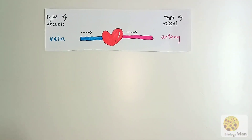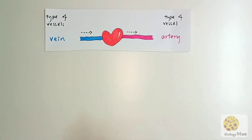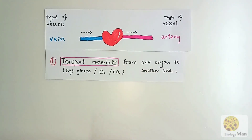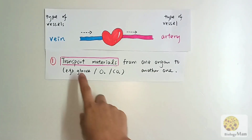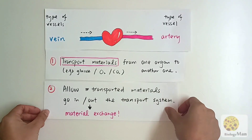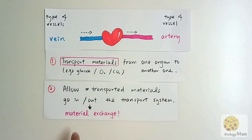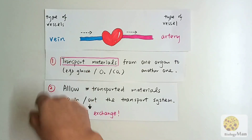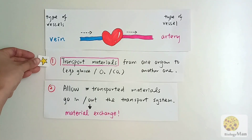Today we will talk about veins. A vein is a type of blood vessel. Blood vessels serve two functions: first, to transport materials, and second, to do material exchange. For veins, the function is to transport materials.